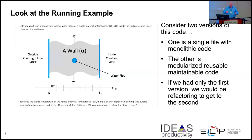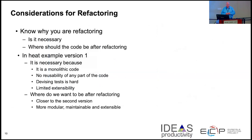Looking at our running example, we have a couple of different versions of this code — one is monolithic and ugly, and the other is more modularized and reusable. Getting from the first version to the second version would be a refactoring process if we're not trying to change the capabilities. In this simple heat equation example, you have to change the code every time you want to change different integrators, there's no reuse, and devising tests is hard.